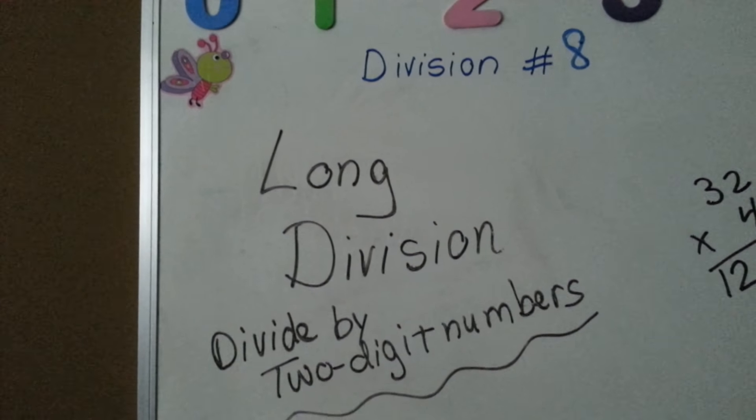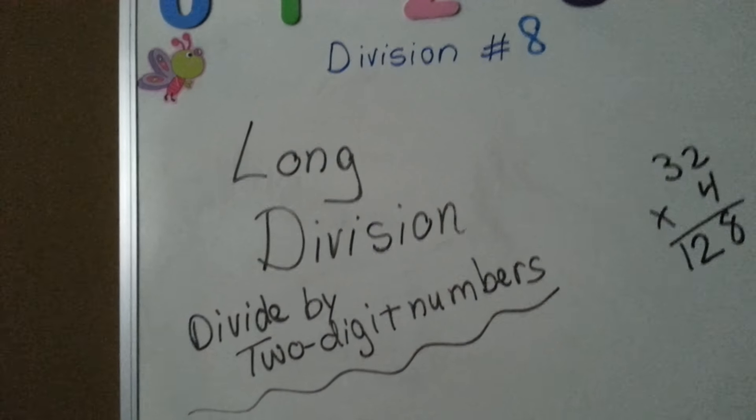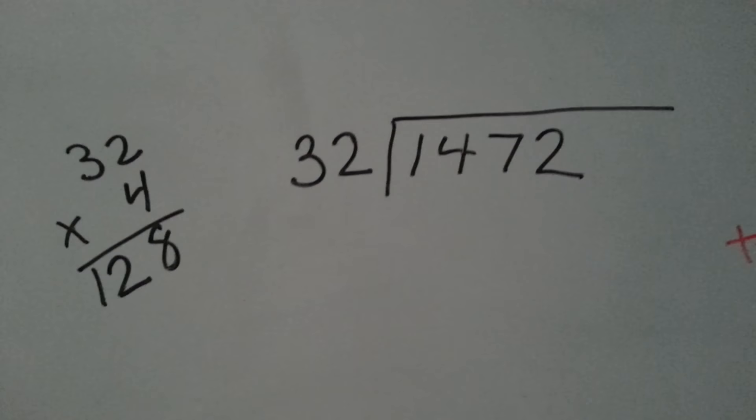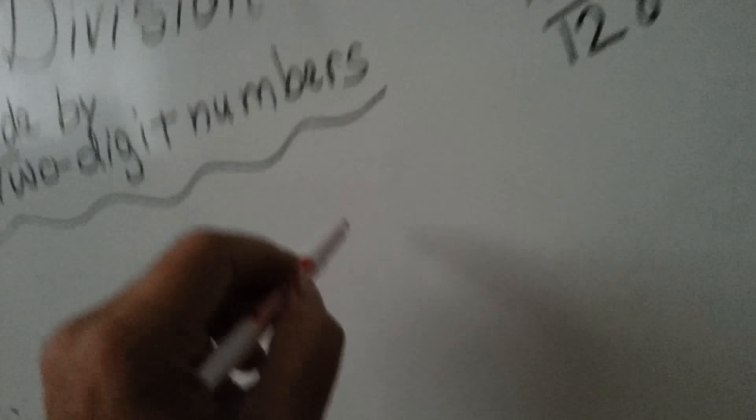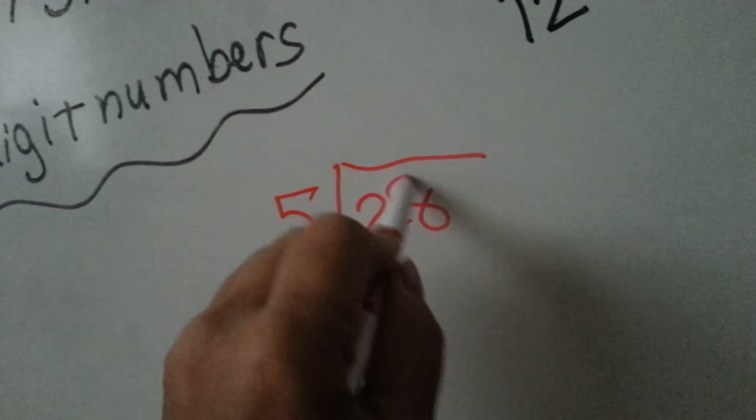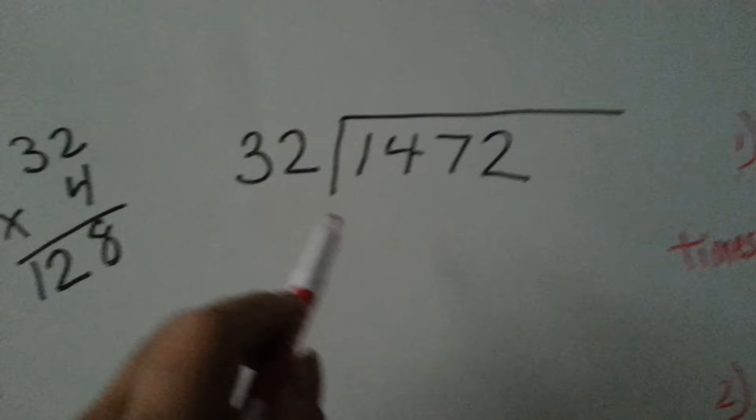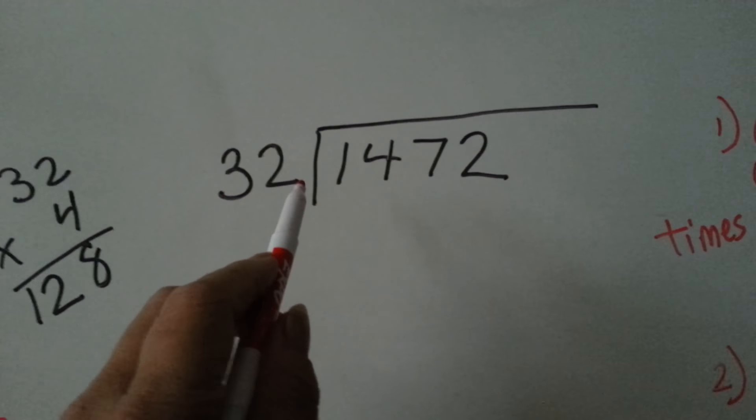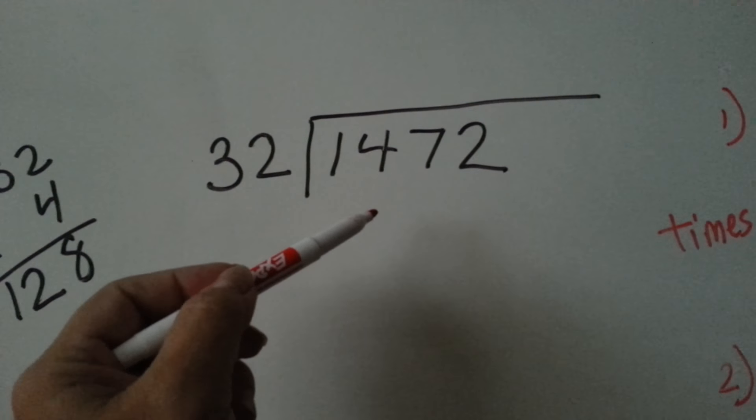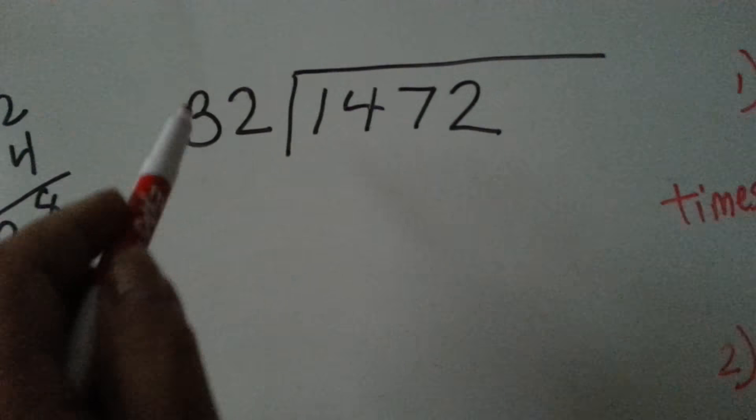Long division: how to divide by two-digit numbers. We've done division showing putting one number into another number, but now let's try it with a two-digit number. Here we're going to try 32 goes into 1472 and we're going to come up with our answer.